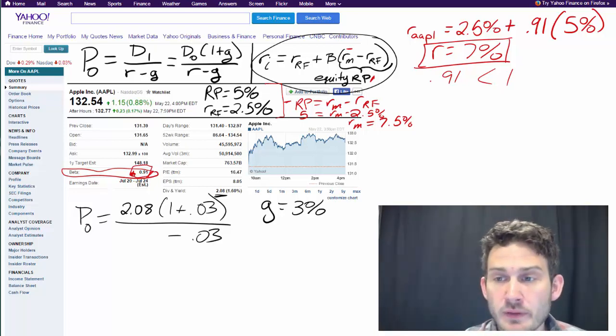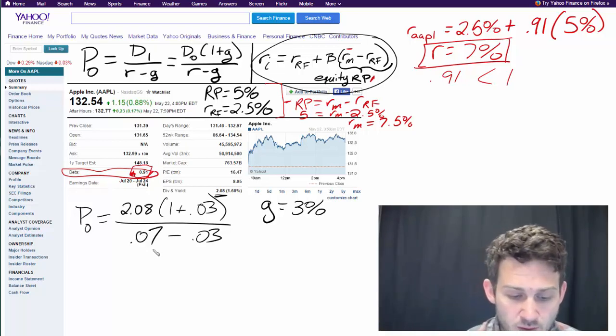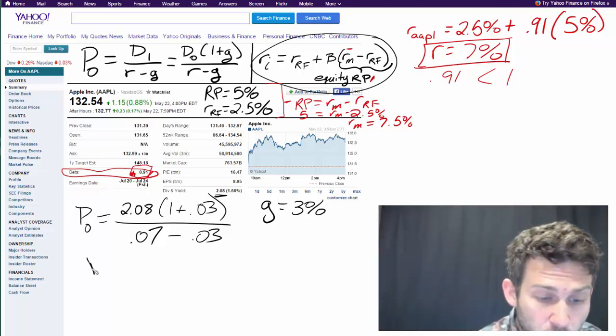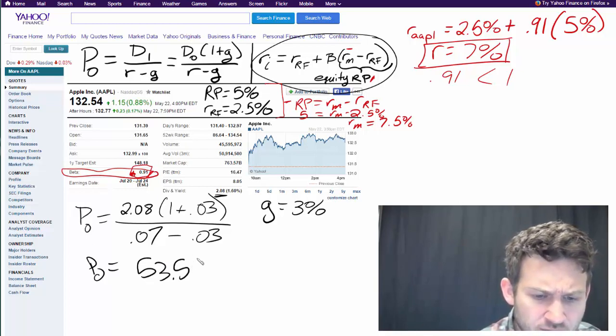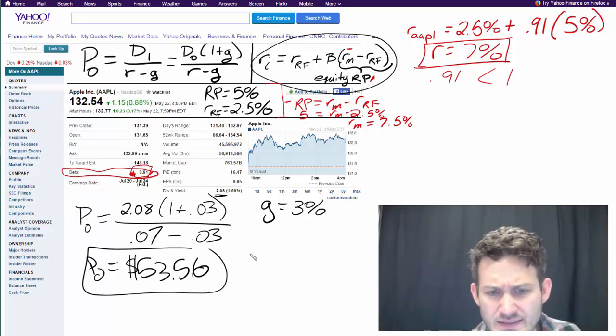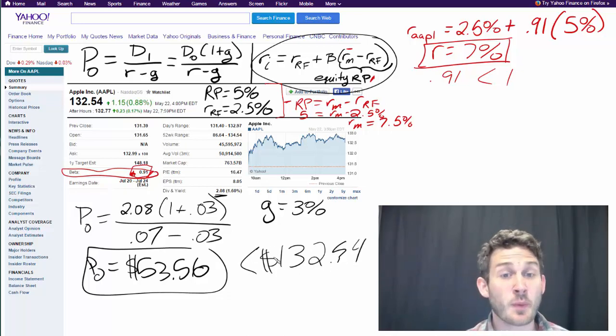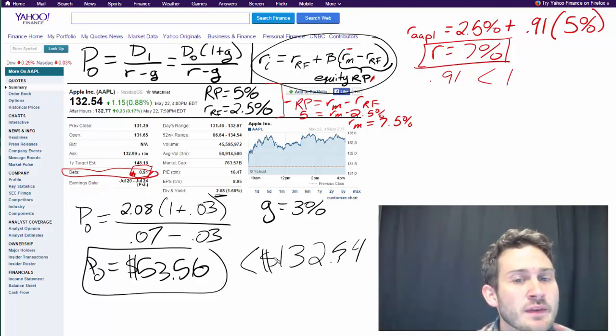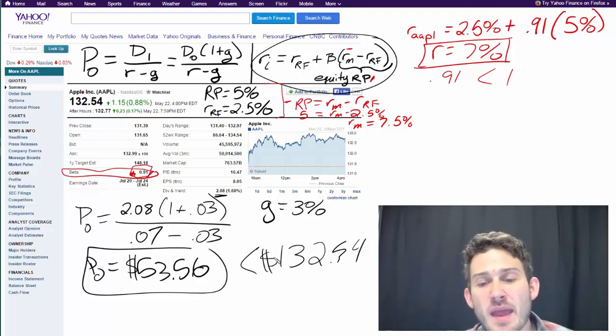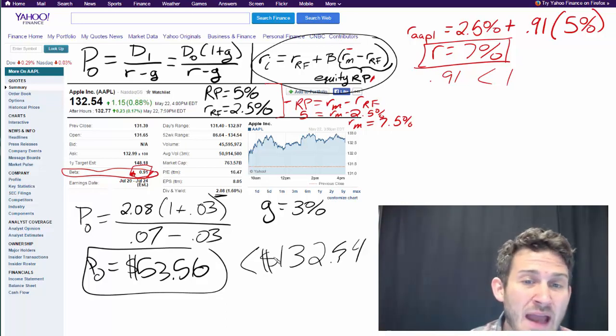We're given that return of 7%, so we can plug that in. Then we come up with a current price here of $53.56. That's a little bit less than $132.54. When we see a number this far apart, if this was a true valuation of $53.56, then we should be looking at this going maybe we shouldn't be holding on to this stock. Maybe Apple's overpriced, and maybe it is. Apple is kind of one of the darling companies right now. It may very well be overpriced, but we don't know.